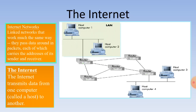Internet networks are linked networks that work much the same way — they pass data around in packets, each of which carries the addresses of its sender and receiver. The internet transmits data from one computer, called a host, to another.